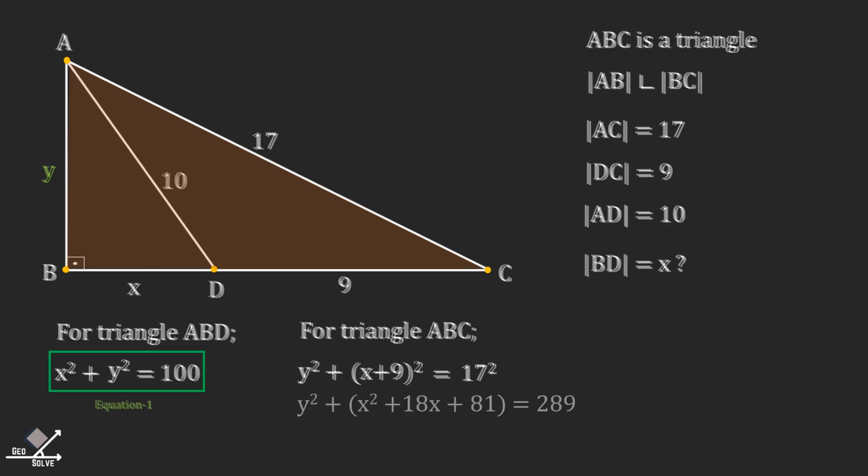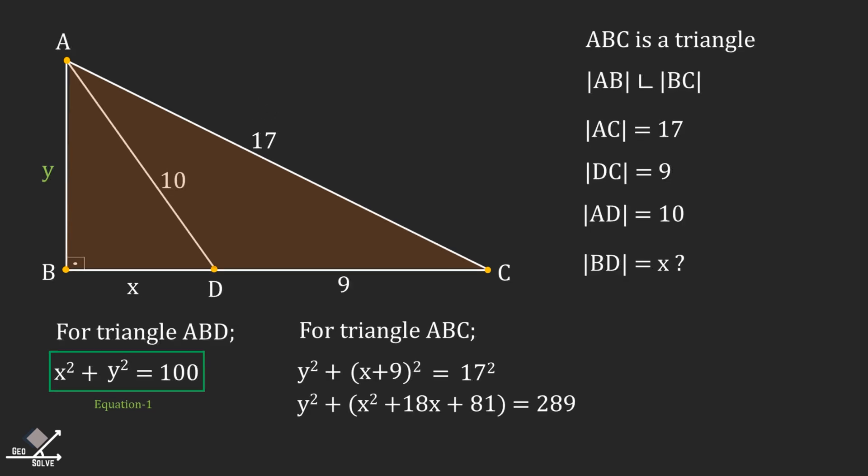Expanding the equation, we have y squared plus x squared plus 18x plus 81 equals 289. That gives us y squared plus x squared equals 208 minus 18x. Let's call this equation number two.